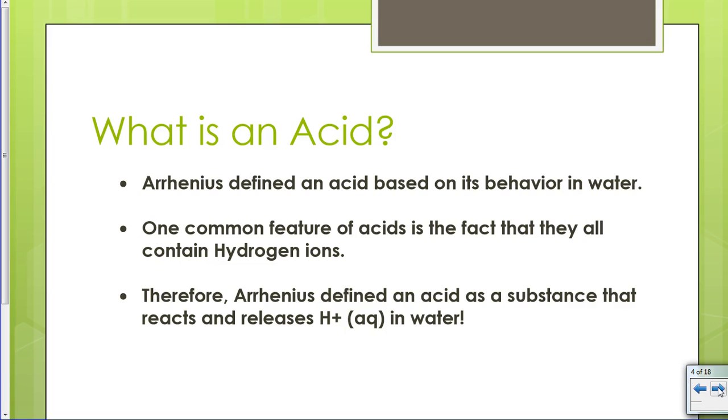Arrhenius. Arrhenius is fun because his name kind of sounds like he wants to be a pirate. Arrhenius defined an acid based on its behavior in water. He found that they all contained hydrogen ions. Basically, what he found was that all acids had to have hydrogen ions. Therefore, they had to have H positive.